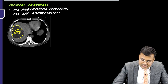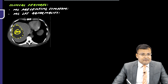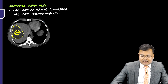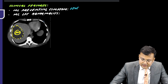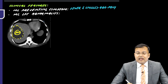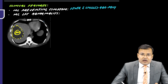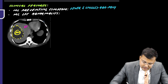The most common presenting symptom of pyogenic liver abscess is fever with chills, since there is a pus-filled cavity in the liver. This is followed by abdominal pain as the second most common symptom.